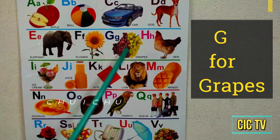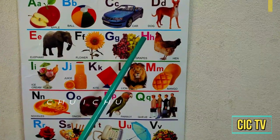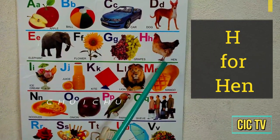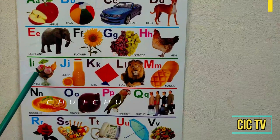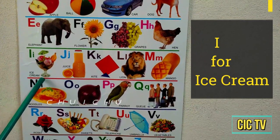G for grapes, H for hen, I for ice cream.